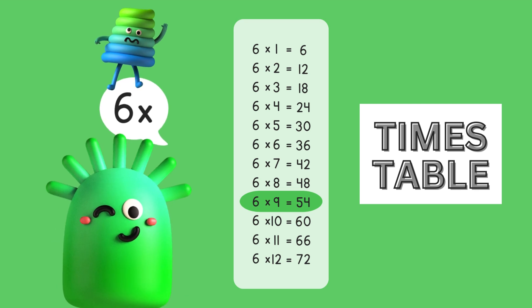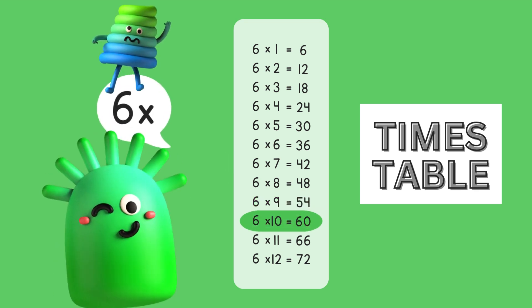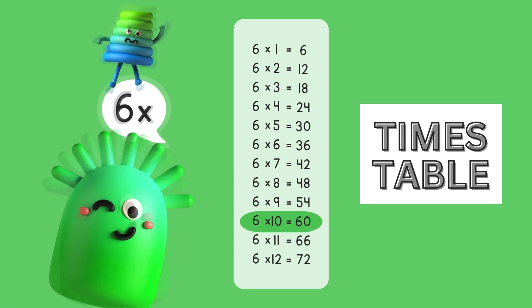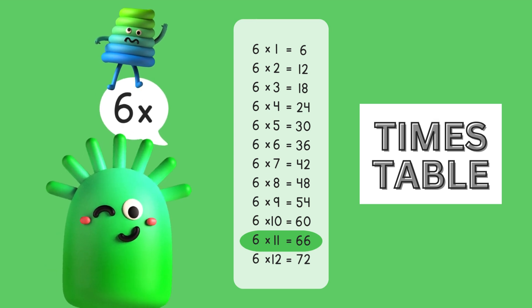Six times nine is fifty-four. Six times ten is sixty. Six times eleven is sixty-six. Six times twelve is seventy-two.